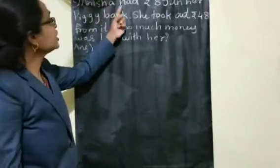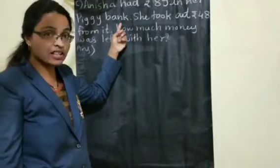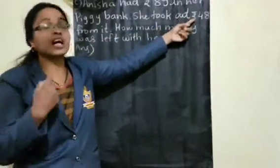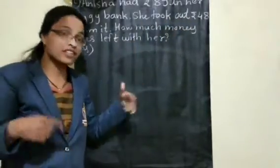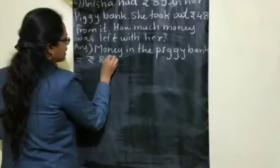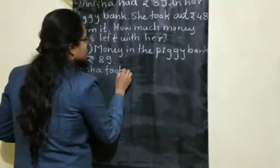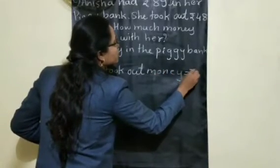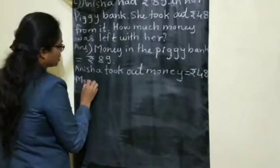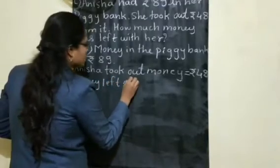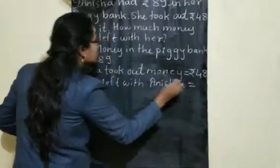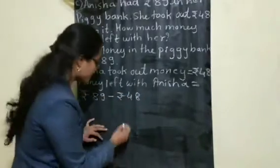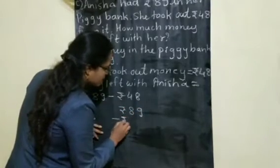Next example: Anisha had rupees 89 in her piggy bank. She took out rupees 48 from it. How much money was left with her in the piggy bank? Given: Anisha had rupees 89. Amount she took out is rupees 48. We write money left with Anisha equals rupees 89 minus rupees 48, in vertical form.